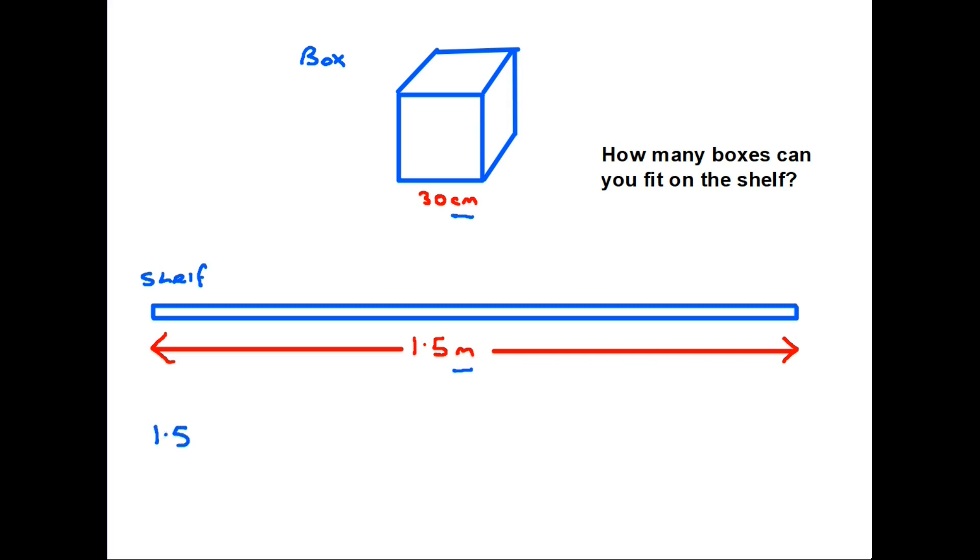So let's do that. The shelf is 1.5 metres. We know that to convert metres into centimetres we have to multiply and we know there are 100 centimetres in a metre. So 1.5 times 100 is 150. So the shelf is 150 centimetres long. In order to work out then how many boxes we can fit on the shelf we take the length of the shelf and we divide it by the width of one box. 150 divided by 30 is 5. So the answer would be we can fit 5 boxes on the shelf.